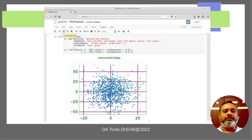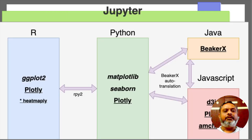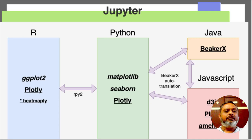BeCorrex provides very strong plotting facilities. It works on Java and can interact with JavaScript or Python, and Python in turn can interact with R. So we can use ggplot2, plotly, and readmaply from R via Python to BeCorrex, and use matplotlib, seaborn, and plotly from Python — all through BeCorrex auto translation.